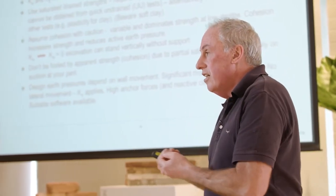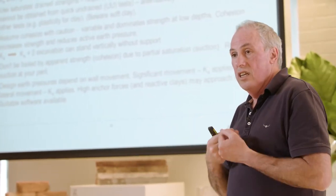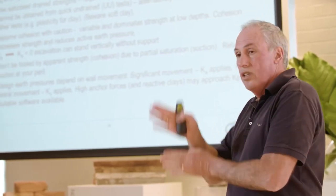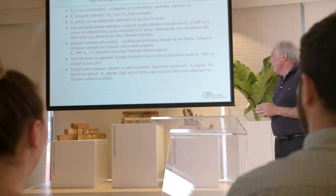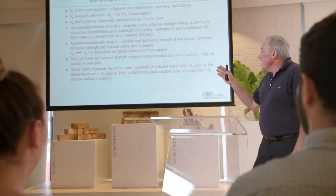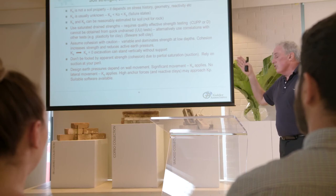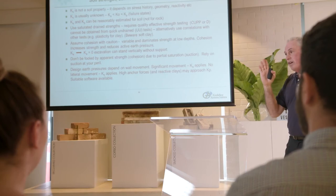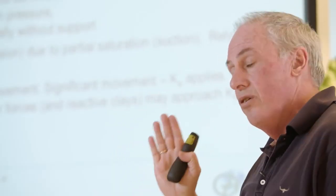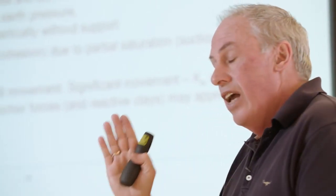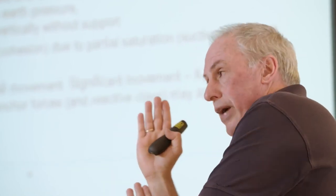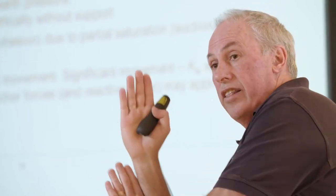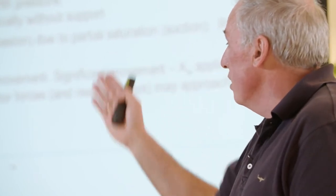If you have 10 kPa cohesion, you can dig a hole two metres deep vertically unsupported with no active pressure acting on the wall. But of course that might collapse over time — the cohesion you see is a false cohesion, a suction in the clay, which is actually holding it from collapsing. The design earth pressures depend on how far the wall moves: a very rigid wall will have earth pressure close to K0, a very flexible wall close to Ka, and if you put very high anchor forces on a wall and pull it back into the soil, you'll have something higher than K0.